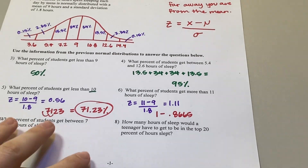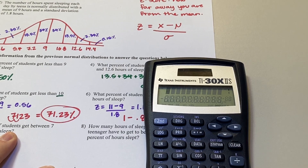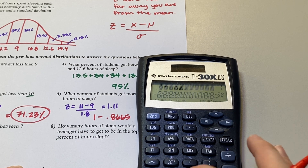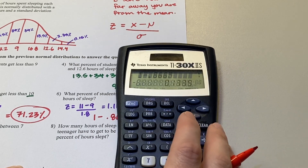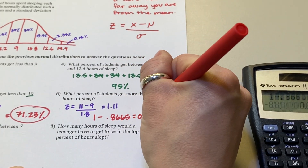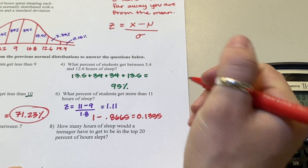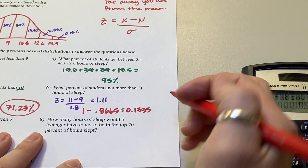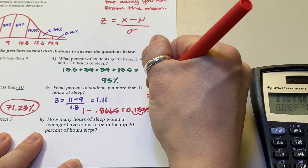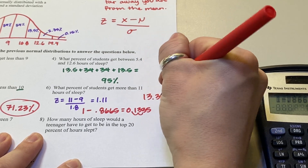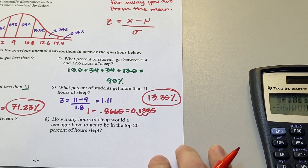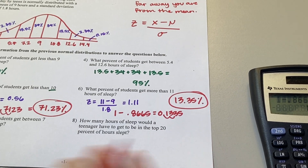We do 1 minus 0.8665, which gives 0.1335. Converting to a percentage: 13.35% of students get more than 11 hours of sleep.